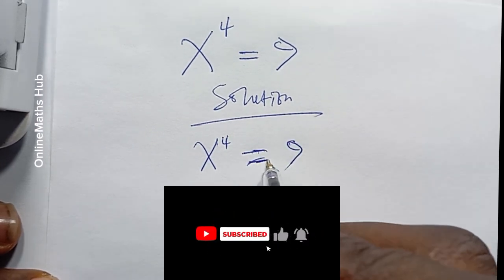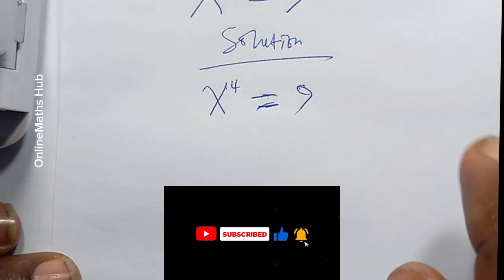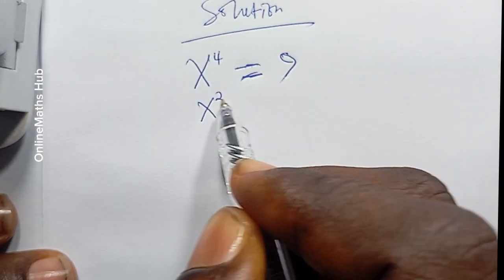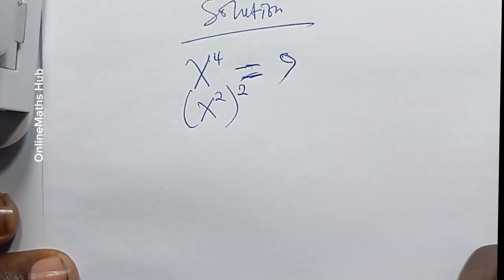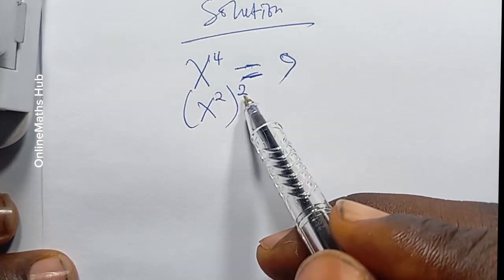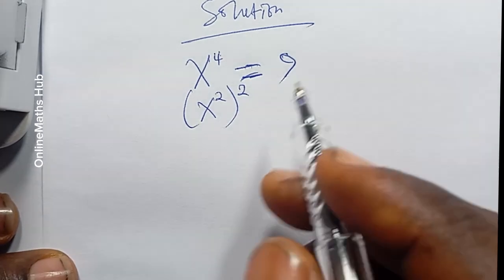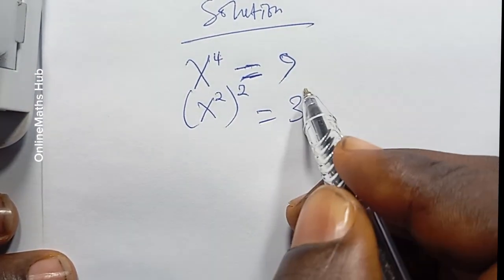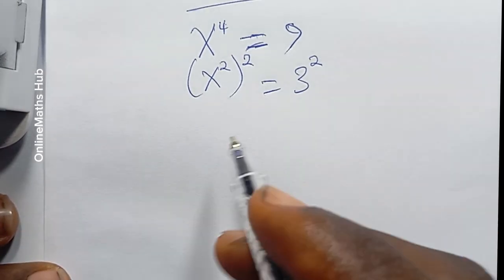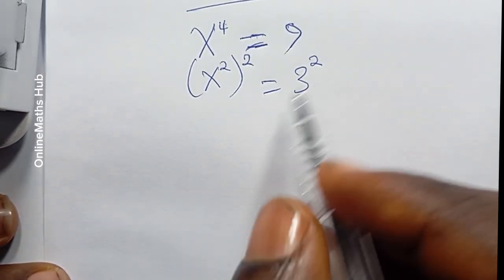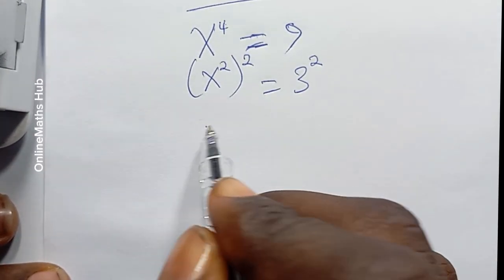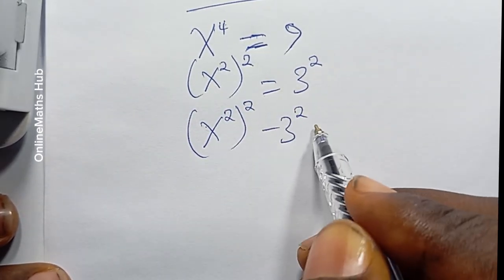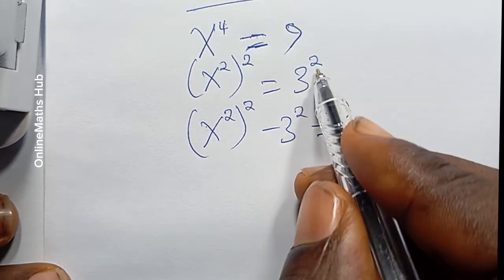We want to find out all the roots of this equation. To do that, I'm going to write x power 4 as x power 2, all raised to power 2 — this is just the same because 2 times 2 equals 4. I can also write 9 as 3 power 2, then subtract 3 power 2 from both sides.